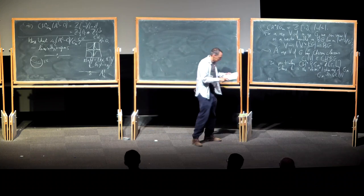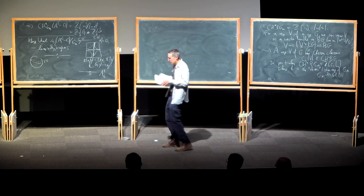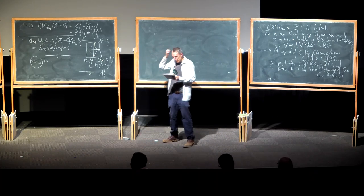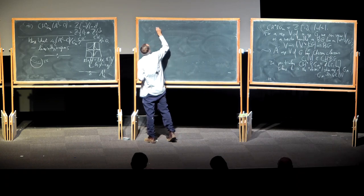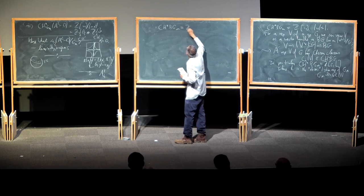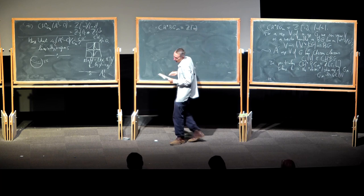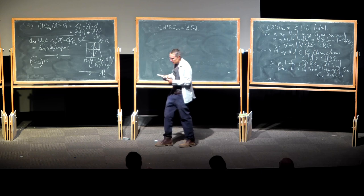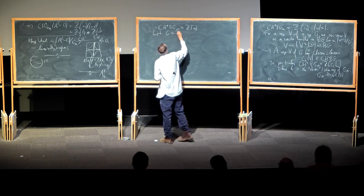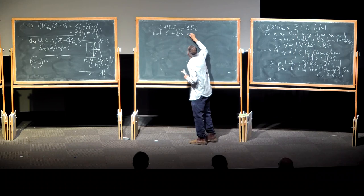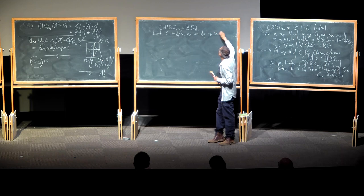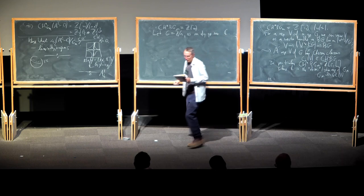More calculations of Chow rings of classifying spaces: I've computed the Chow ring of BG_m as a polynomial ring on one generator. The next case is: what about for a finite cyclic group? Let G = Z/N, as an algebraic group over the complex numbers.